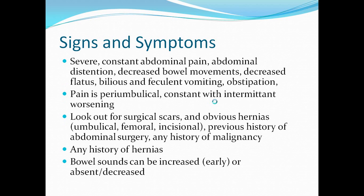Signs and symptoms — this is something you won't really miss on a patient. Usually there's severe, constant abdominal pain, abdominal distension, decreased bowel movements, and decreased flatus. There's often bilious and feculent vomiting and obstipation. The feculent vomiting is often a result of bacterial overgrowth in the proximal areas of bowel from the obstruction. Pain is very often periumbilical, constant with intermittent worsening.